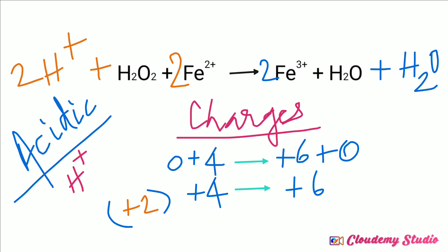Now hydrogen is equal on both sides. Oxygen also — both sides have 2 atoms each. Iron atoms are also equal on both sides, 2 atoms. And the charges are also equal. So now the equation is balanced.